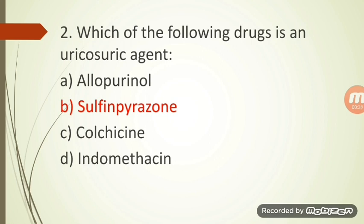Going back to the question: Which of the following drug is a uricosuric agent? Option A: Allopurinol — interferes with uric acid synthesis. Option C: Colchicine — inhibits leukocyte entry into the affected area. Option D: Indomethacin — an NSAID, an anti-inflammatory agent. Option B: Sulfinpyrazone — that is a uricosuric agent that blocks proximal tubular reabsorption of uric acid and increases the clearance of uric acid. The answer is sulfinpyrazone.